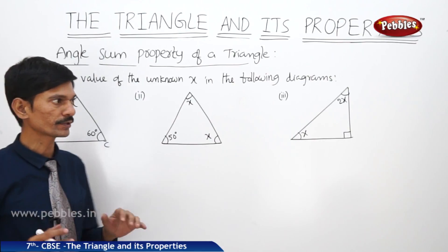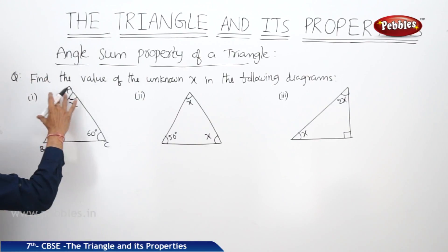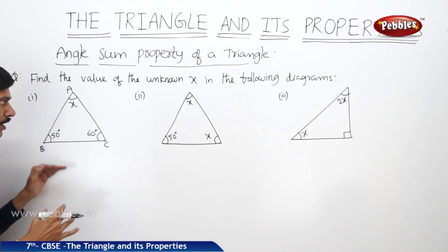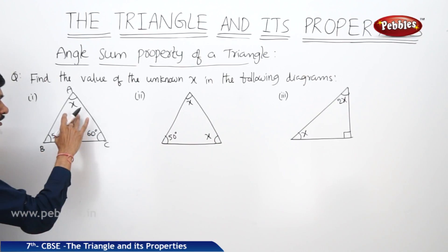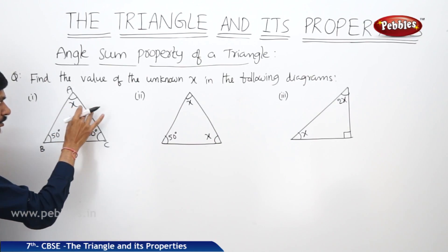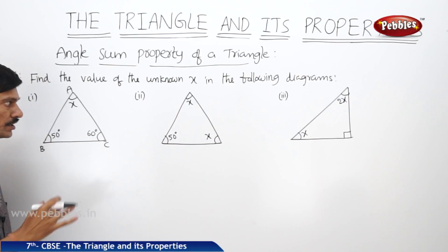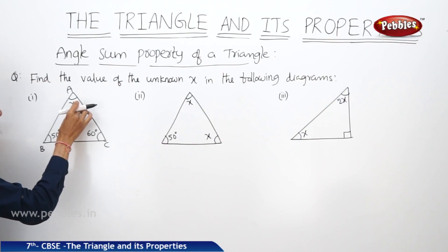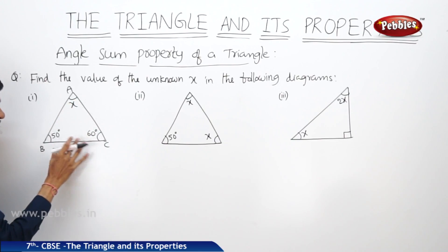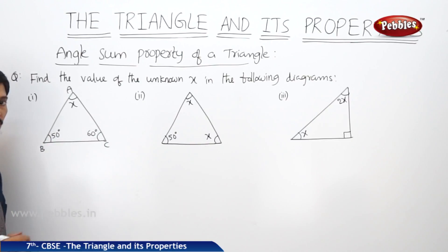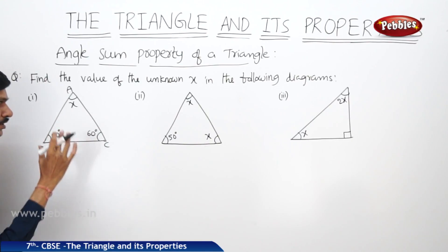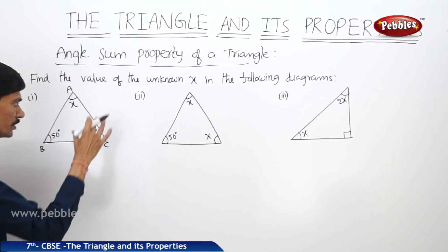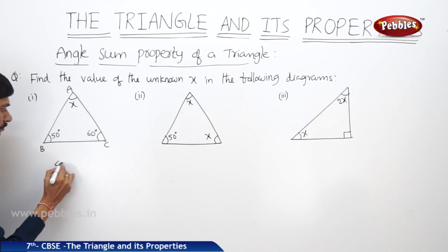Based on this property, let us do a few problems. Find the value of the unknown X in the following diagrams. In each diagram there is an unknown X, and you should find the value of X. In the first figure, one angle is represented by X and the other two angles are represented by 50 degrees and 60 degrees. Find the value of X using the angle sum property of a triangle.